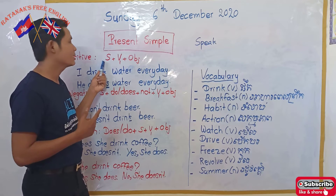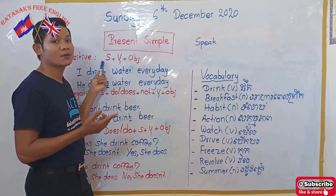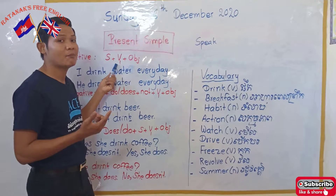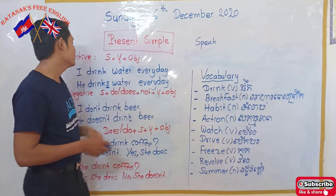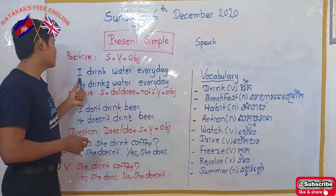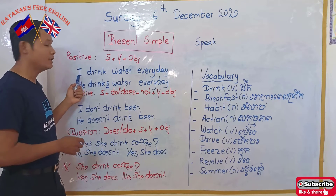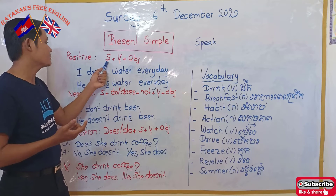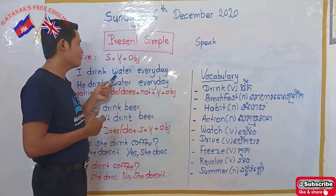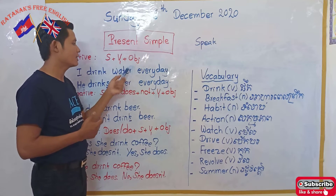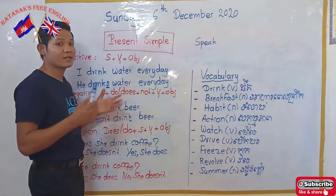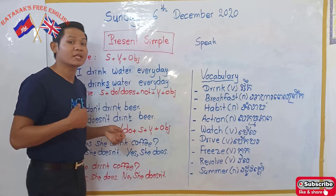For the positive form, please follow this rule: subject plus verb one, or base form, plus object. For example: 'I drink water every day.' Here, 'I' is the subject, 'drink' is the verb in base form, and 'water' is the object. Water can't drink me — I drink water.